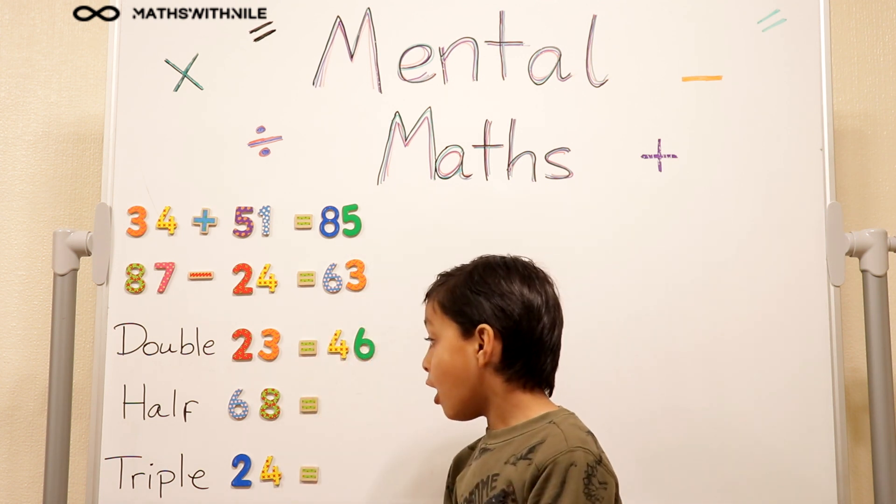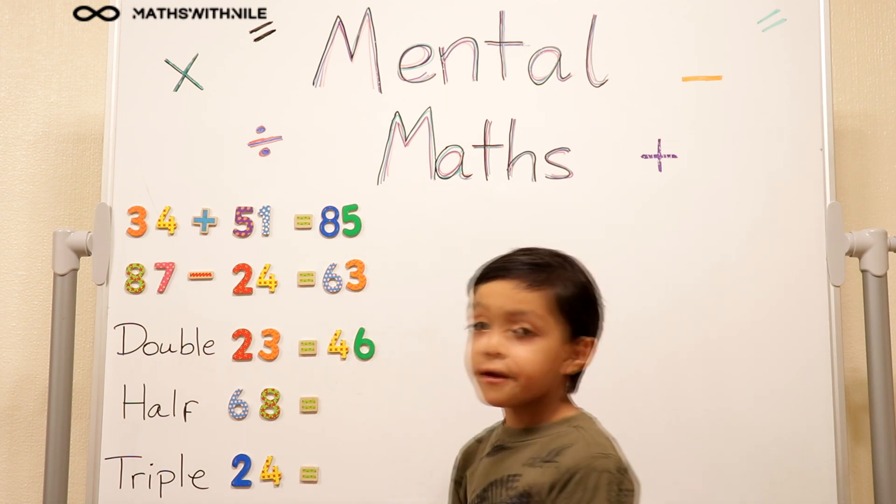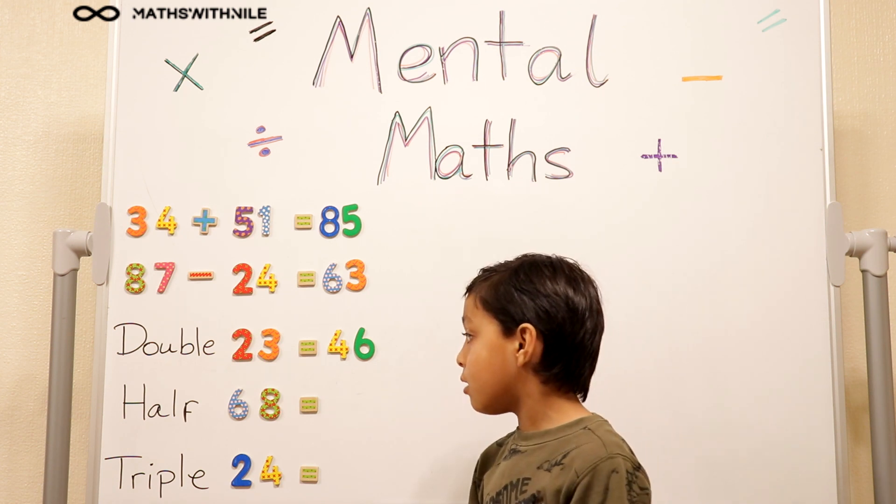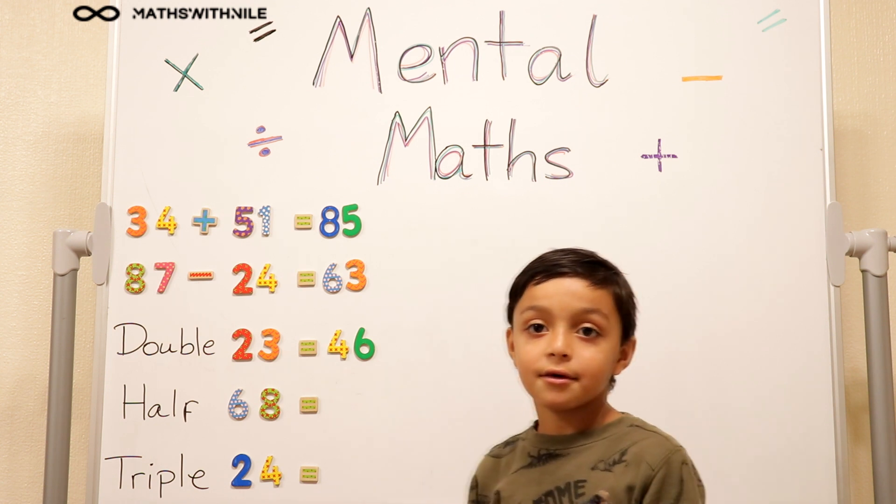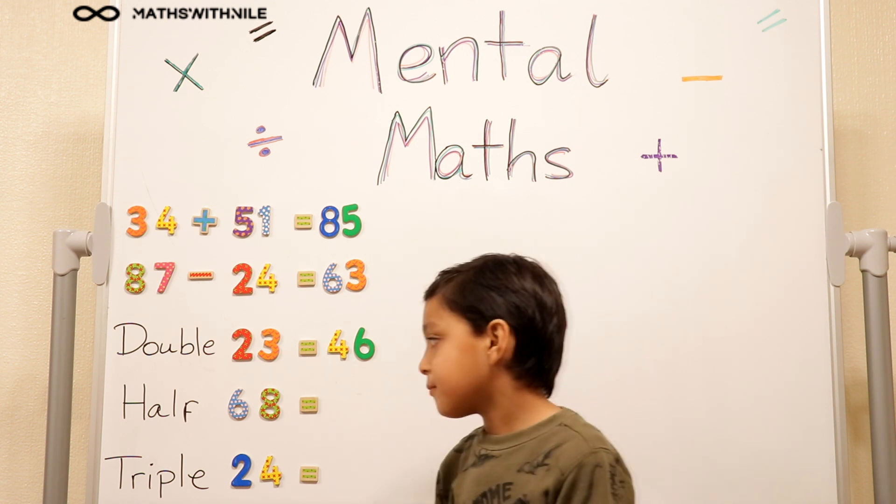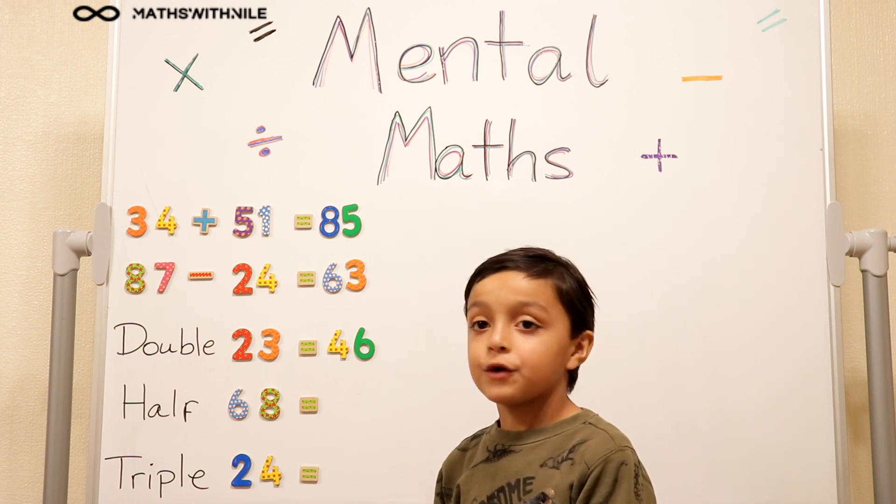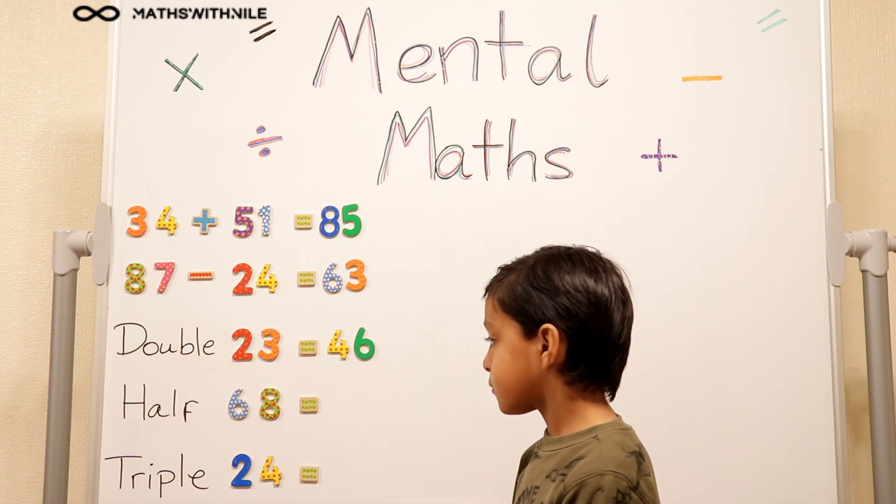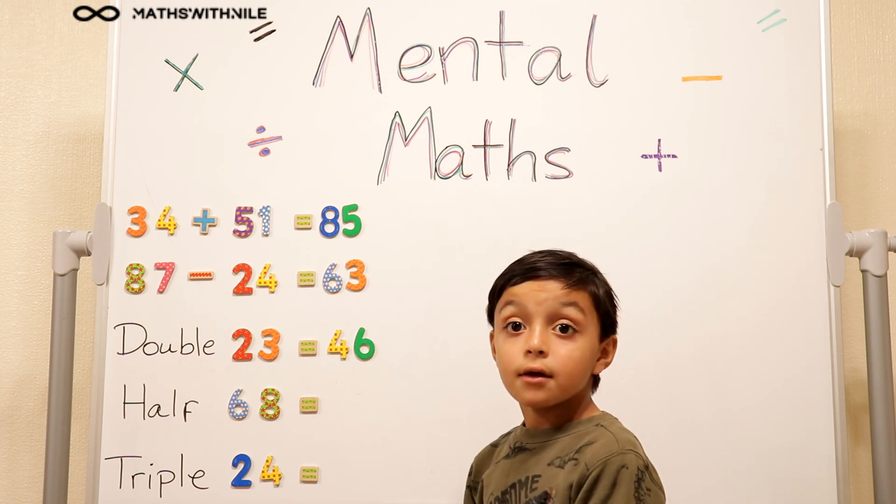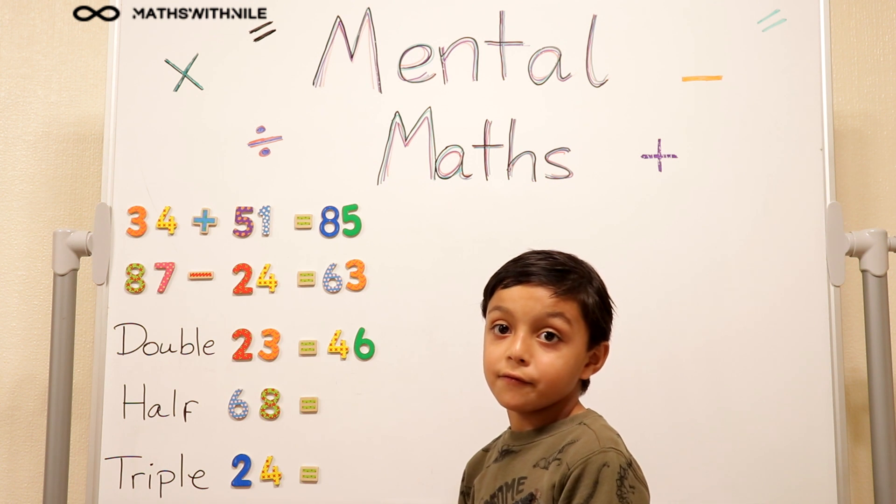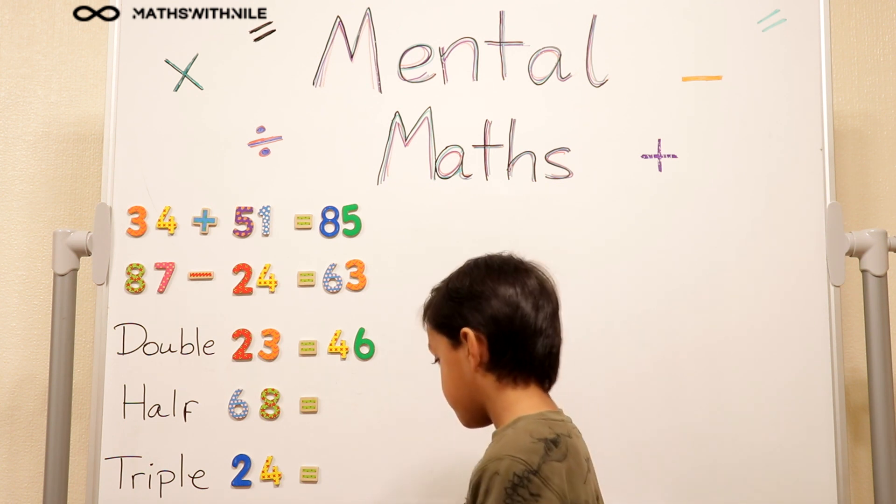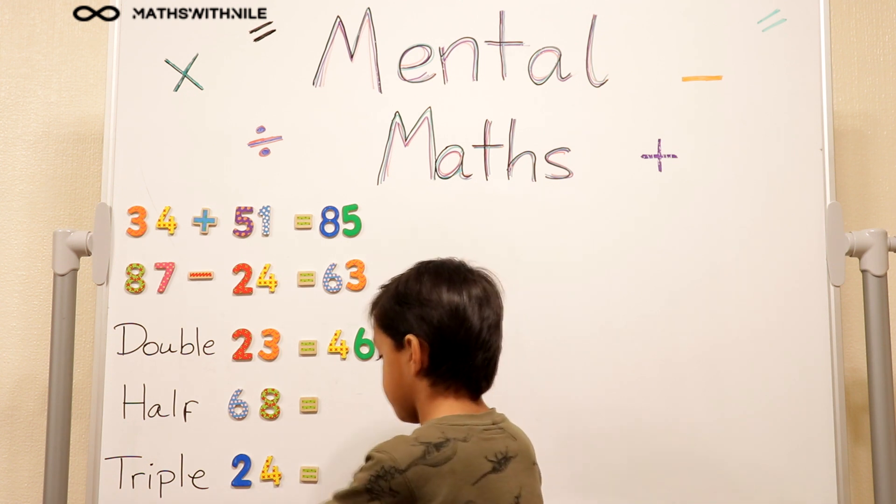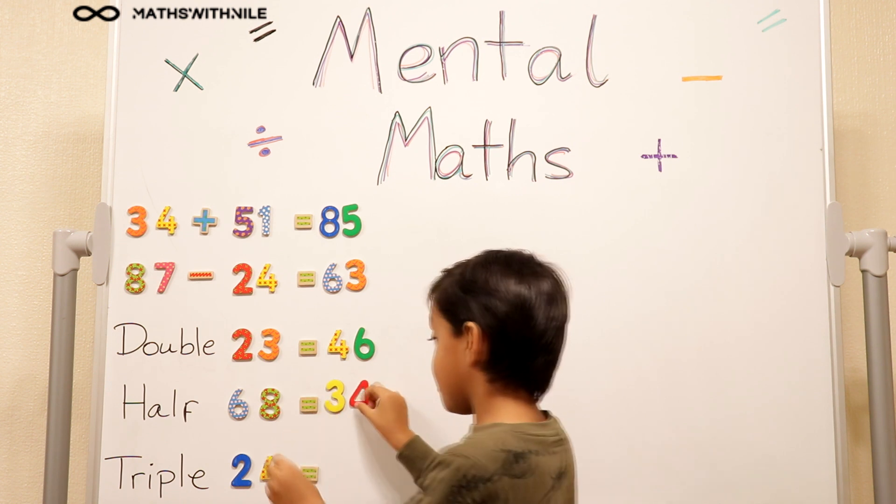Okay, so half 68. So first we're going to half 60 and then we're going to half 8. Okay, so what's half of 60? 30. And what's half of 8? 4. So what's the answer? 38. 34. 34. So half of 60 is 30 and half of 8 is 4. So the answer is 34.